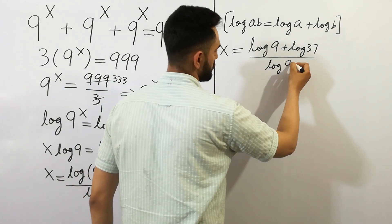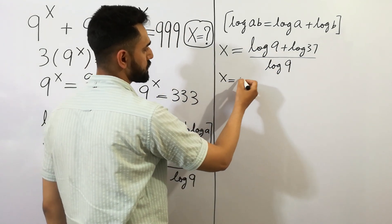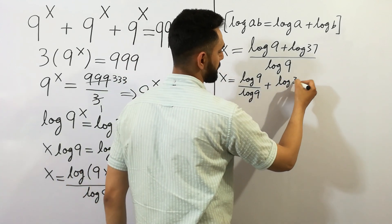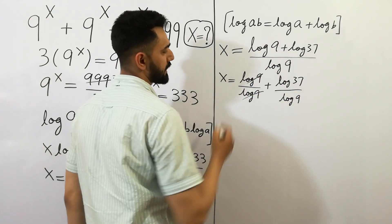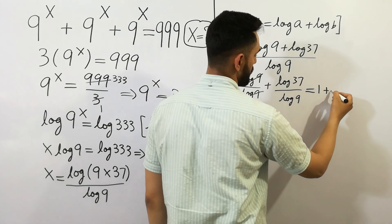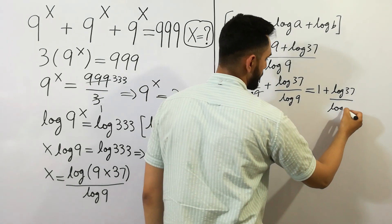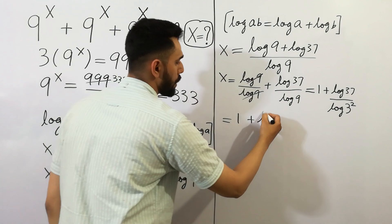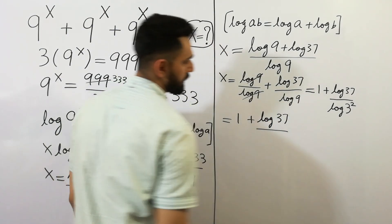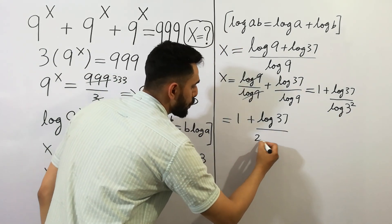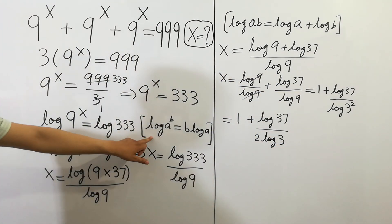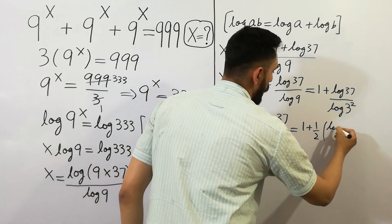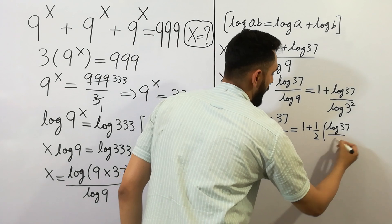So we can write x is equal to log 9 over log 9, plus log 37 divided by log 9. Log 9 divided by log 9 cancels to give 1, and log 9 equals 2 log 3, so we get x is equal to 1 plus log 37 divided by log 3.